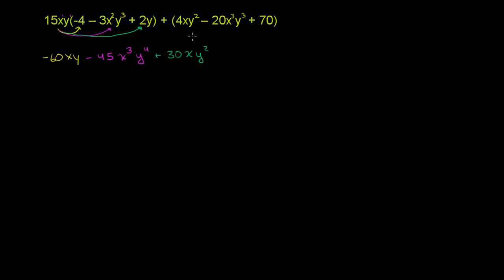And then we're going to add all of this business to that stuff over there. So we have that added to, plus this parentheses really doesn't do anything. We're just adding all of this stuff. So plus 4xy squared minus 20x to the third y to the third plus 70.